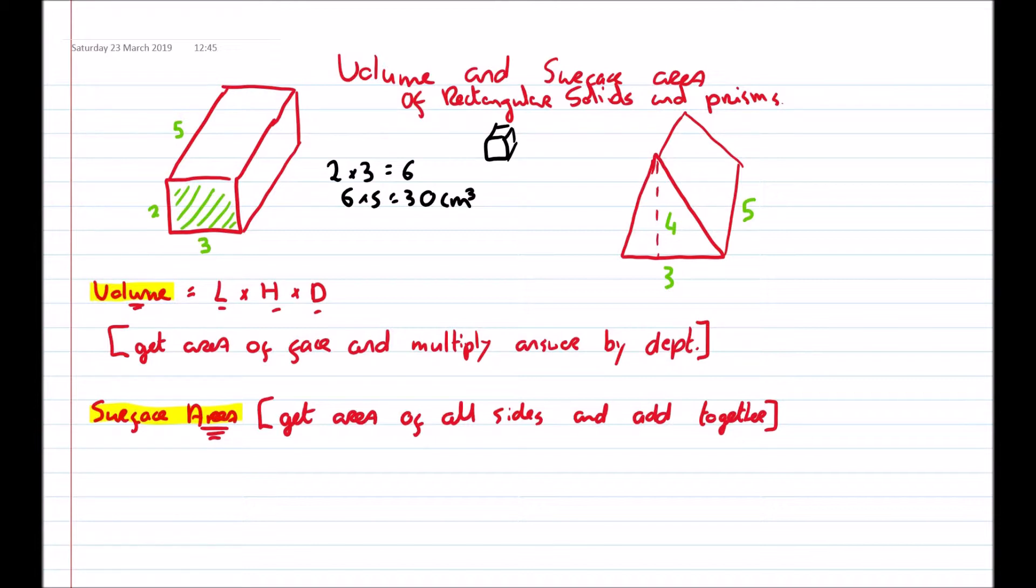The same over with our rectangular prism. We get the area of the face first. So it's a triangle, which will be half base by perpendicular height. So it'll be half 4 multiplied by 3, which is 6 again. Multiply that by 5 then, that's the depth. And we'll get 30. So just a coincidence, it's the same answer. 30 centimeters cubed.